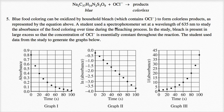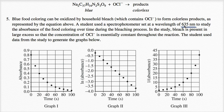A student uses a spectrophotometer set at a wavelength of 635 nanometers to study the absorbance of the food coloring over time during the bleaching process. Since we're talking about blue food coloring, this wavelength is likely blue light, which will be optimally absorbed by blue food coloring. In the study, bleach is present in large excess, so the concentration of hypochlorite is essentially constant throughout the reaction.